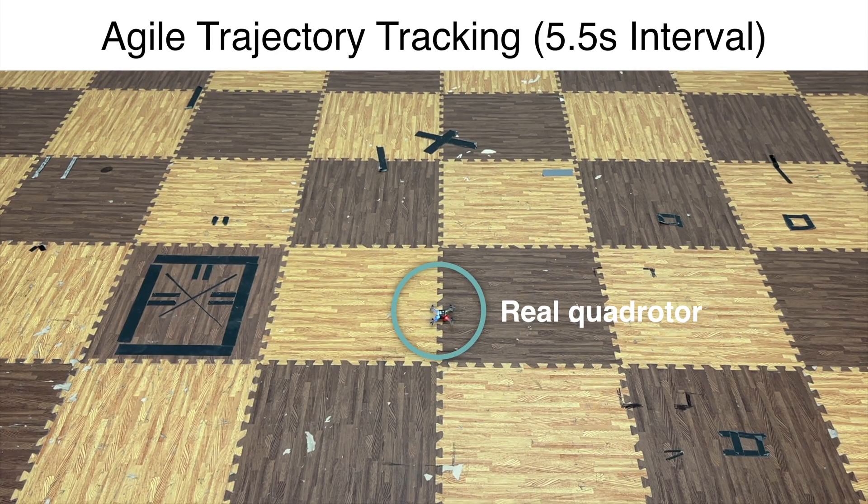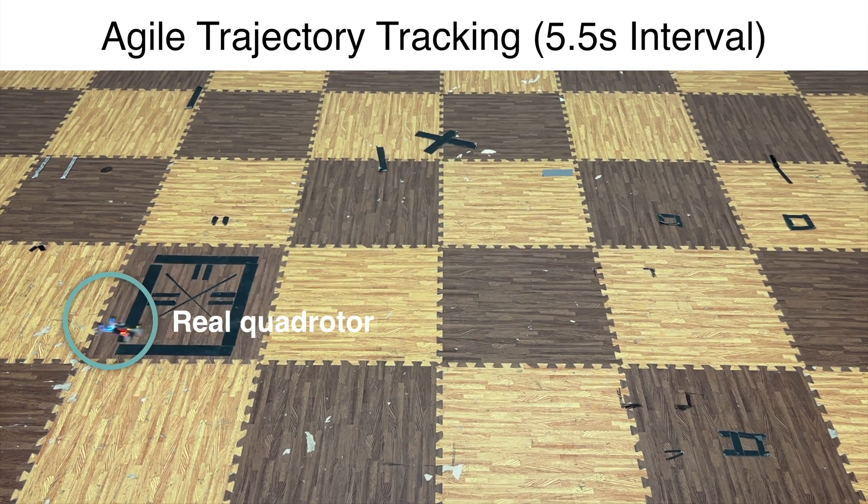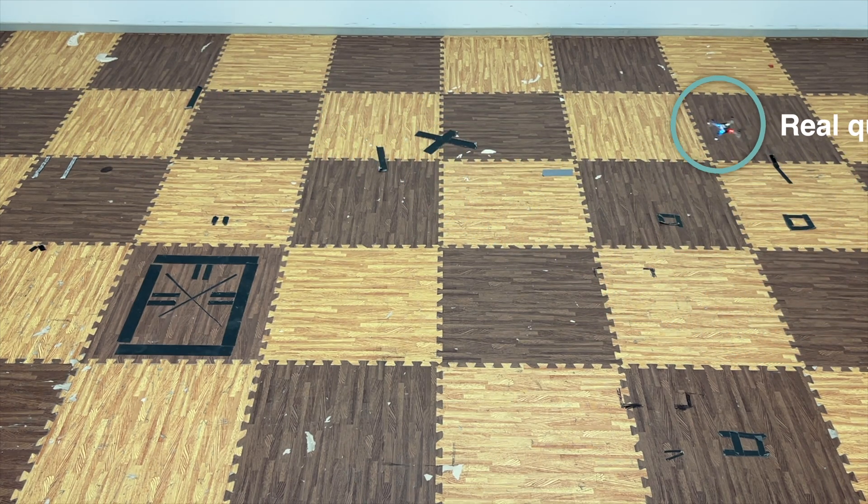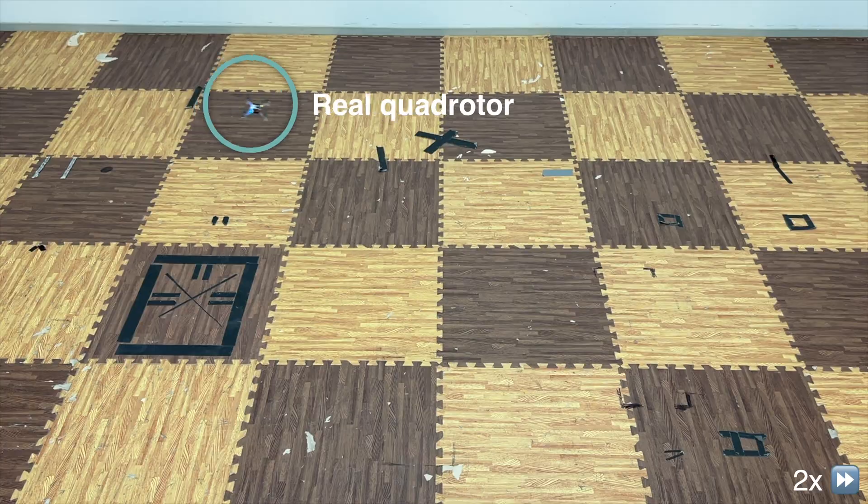Even though we train a position controller in simulation, we find that these trained end-to-end policies generalize to other tasks like trajectory tracking. In this example we task the policy with tracking a moderately fast figure eight with an interval of 5.5 seconds.